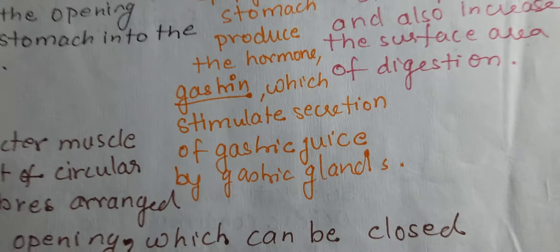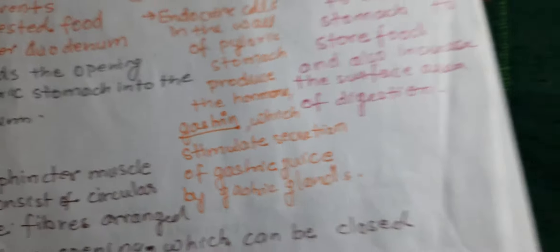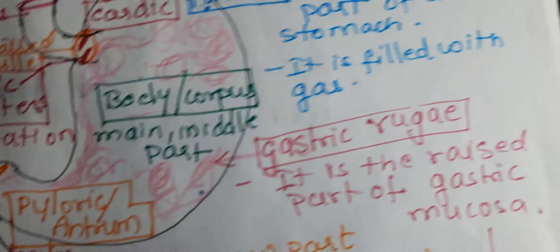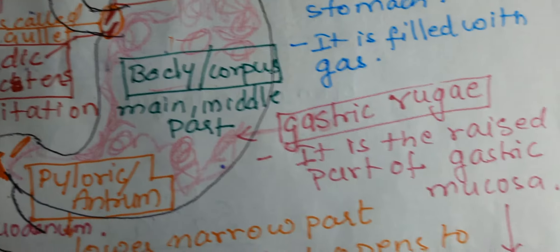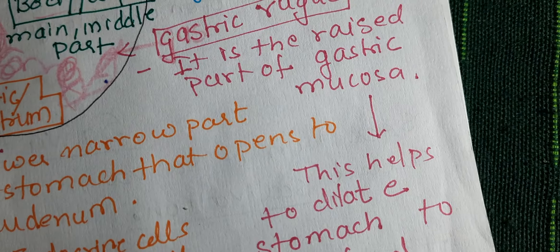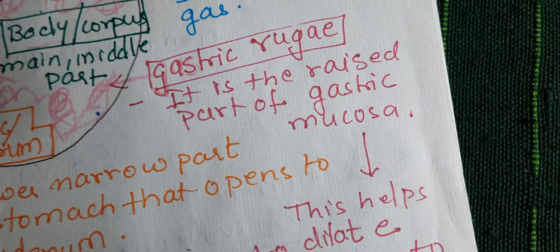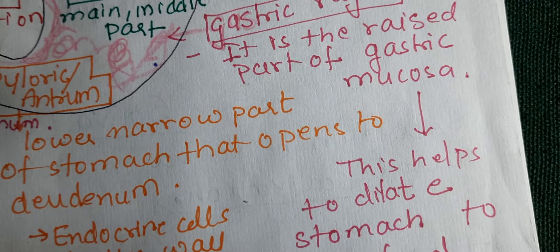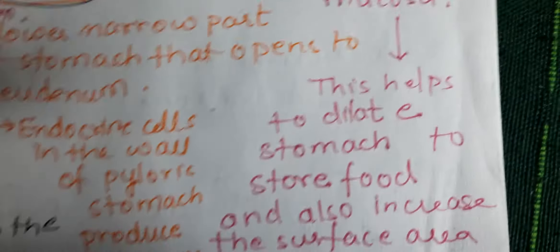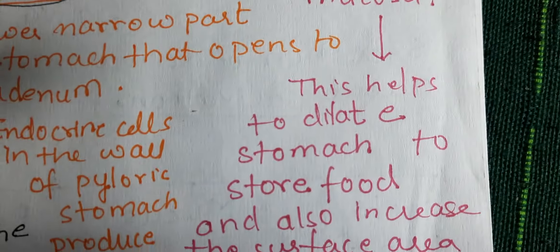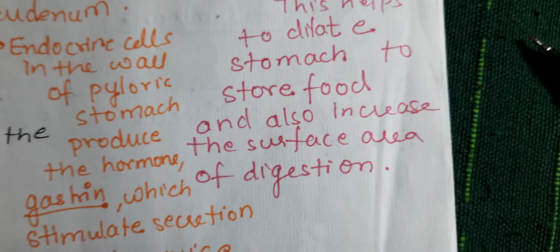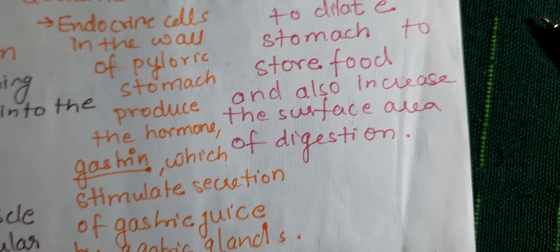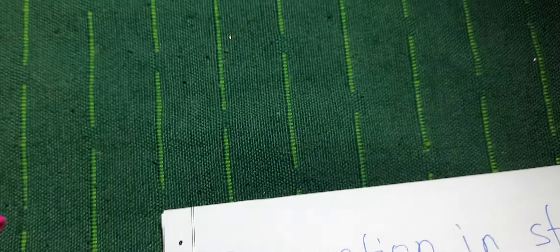The whole stomach is lined by mucosal cells, and throughout there are glandular cells, but specifically in the pyloric region those glandular cells secrete the hormone gastrin. The gastric rugae, present in the main middle part of the stomach, are raised parts of the gastric mucosa — a modification that helps dilate the stomach to store food and also increases the surface area for digestion.